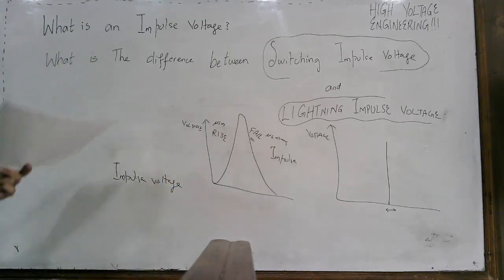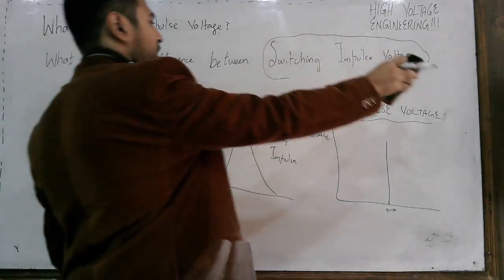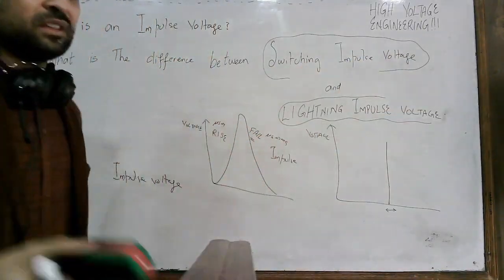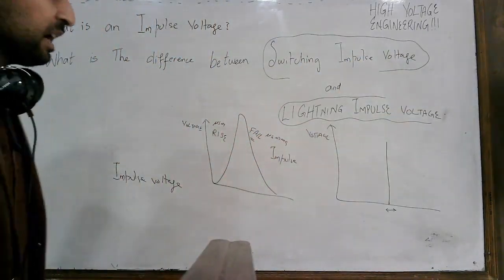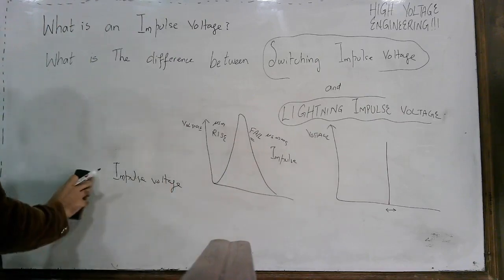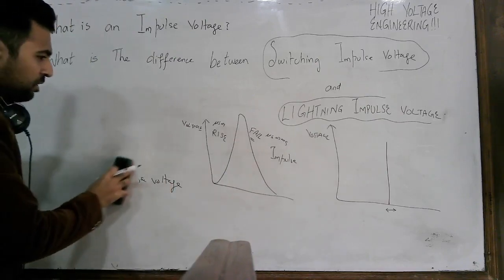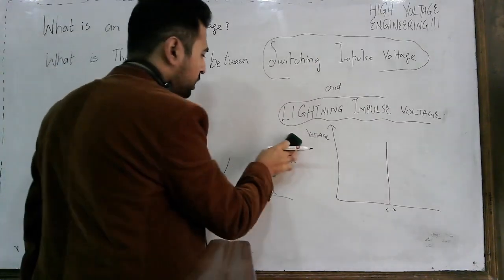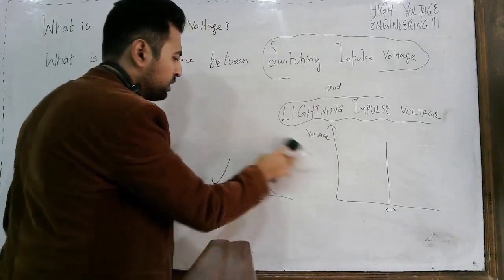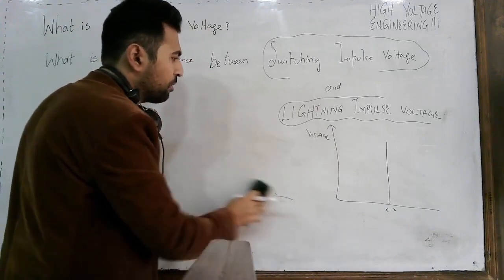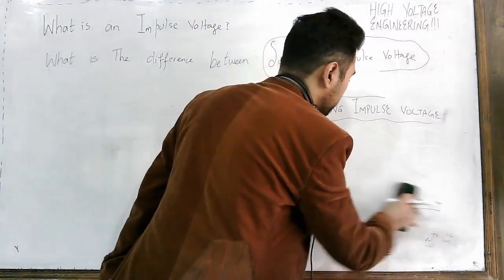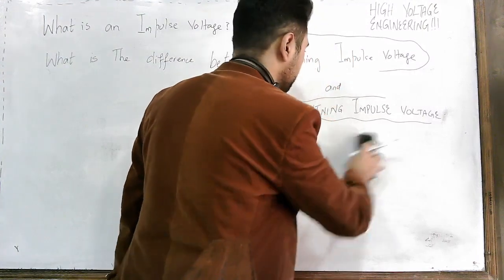Now let us discuss what is the switching impulse voltage and what is the lightning impulse voltage, because these two voltages are what which are commonly observed in electric power systems.